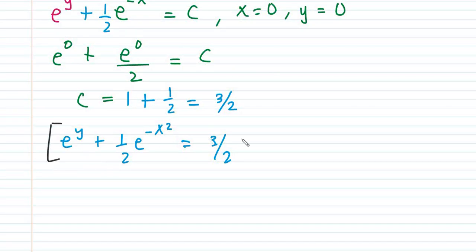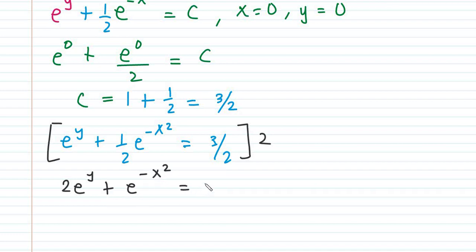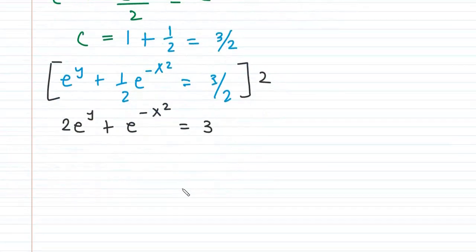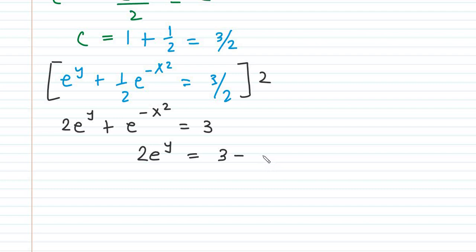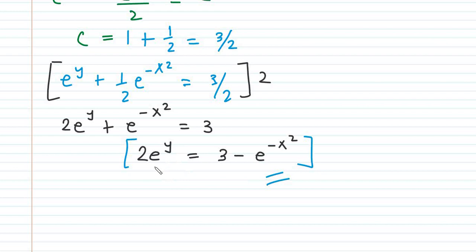Multiplying through by 2, we have 2 e raised to y plus e raised to negative x squared is equal to 3. So 2 e raised to y is equal to 3 minus e raised to negative x squared. Because this is an exponential function, this will be our final answer — at least it is solved in terms of e raised to y, though not explicitly solved for y itself.